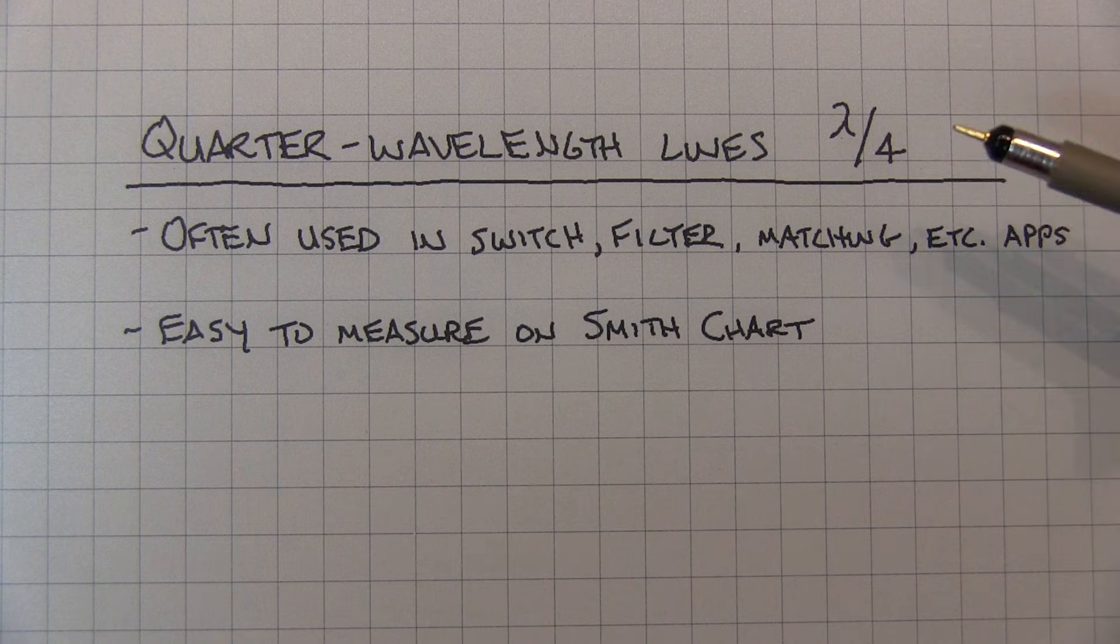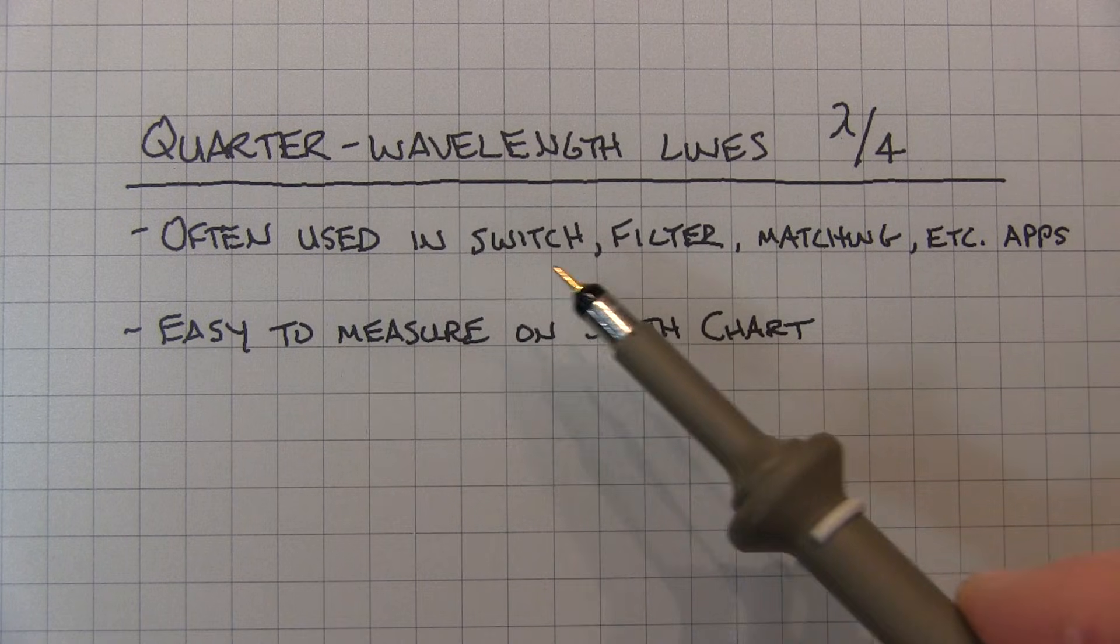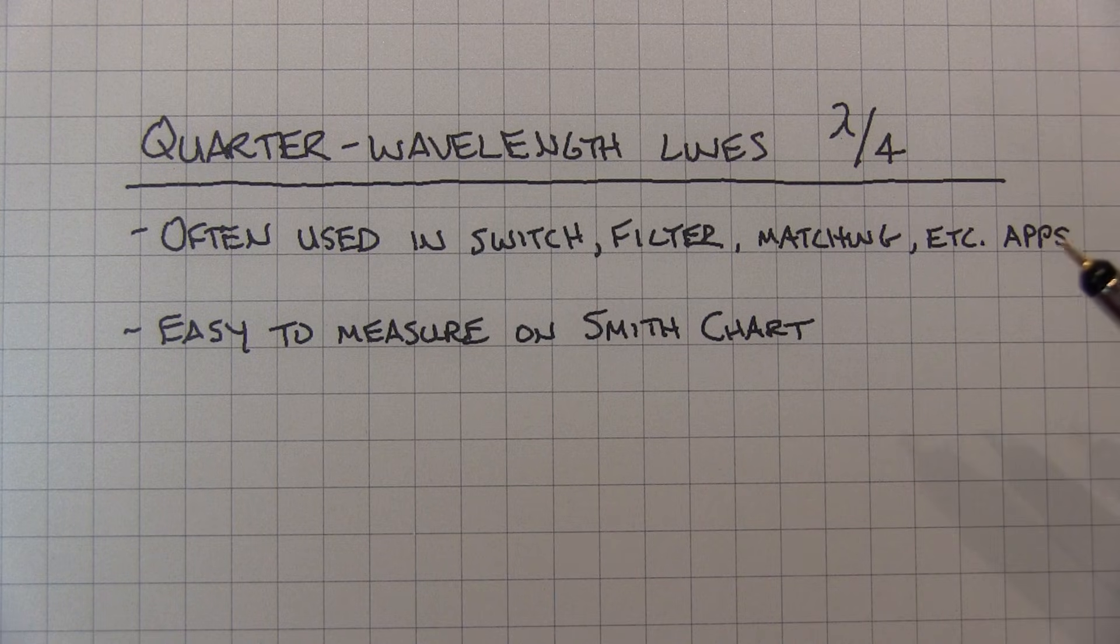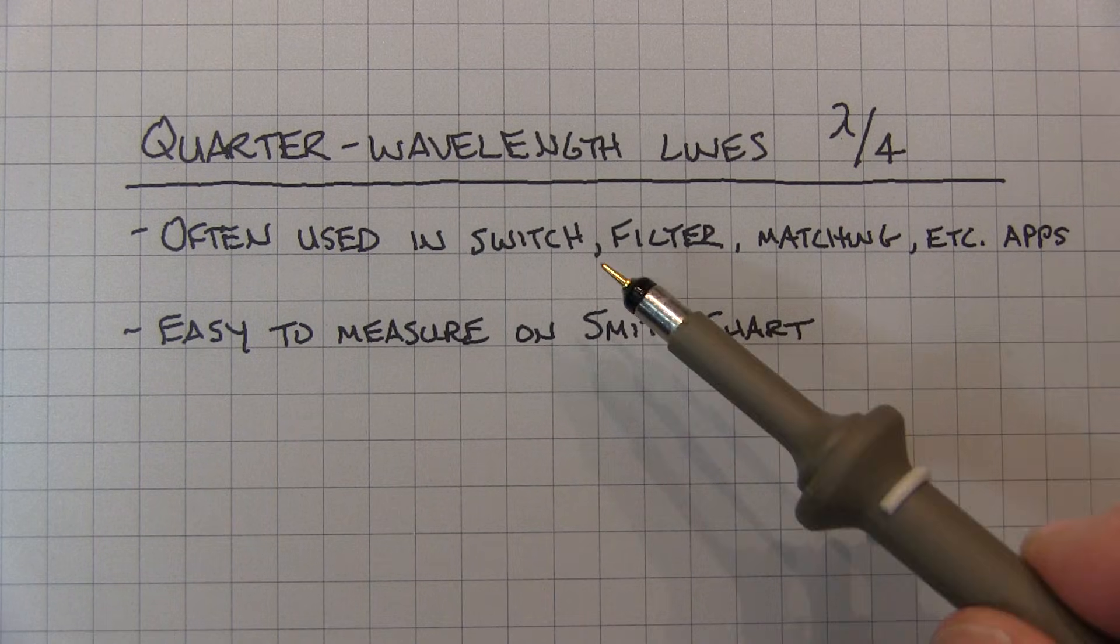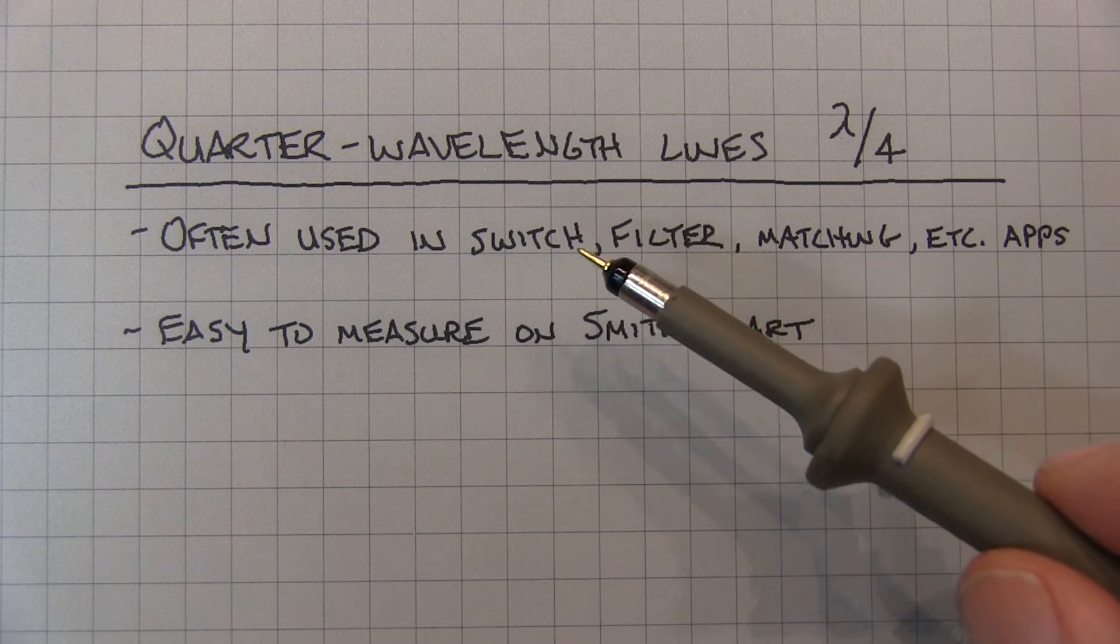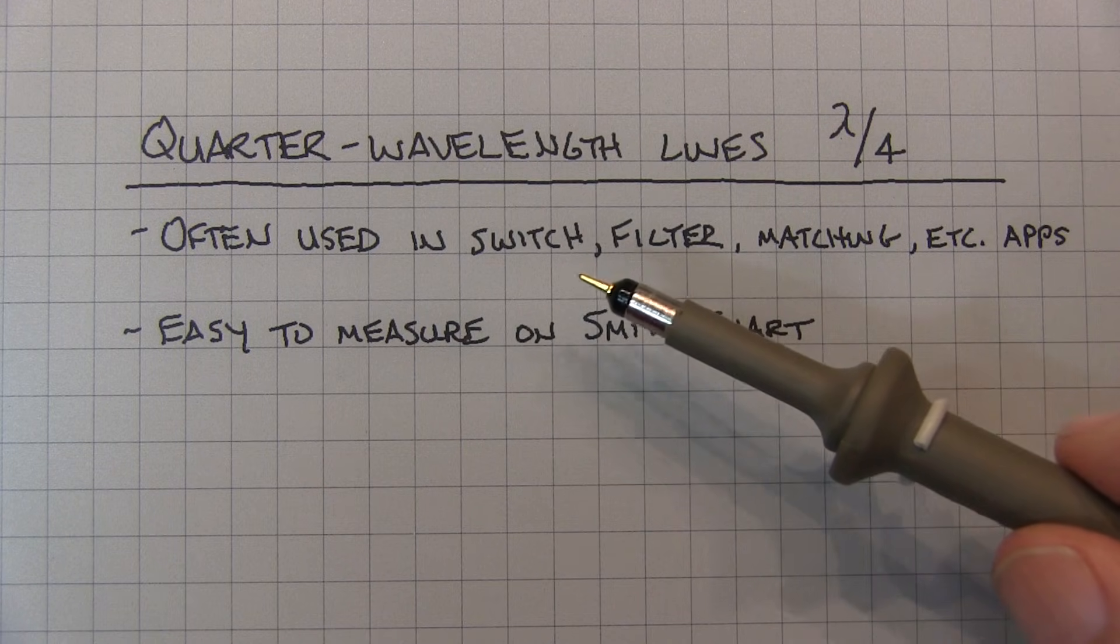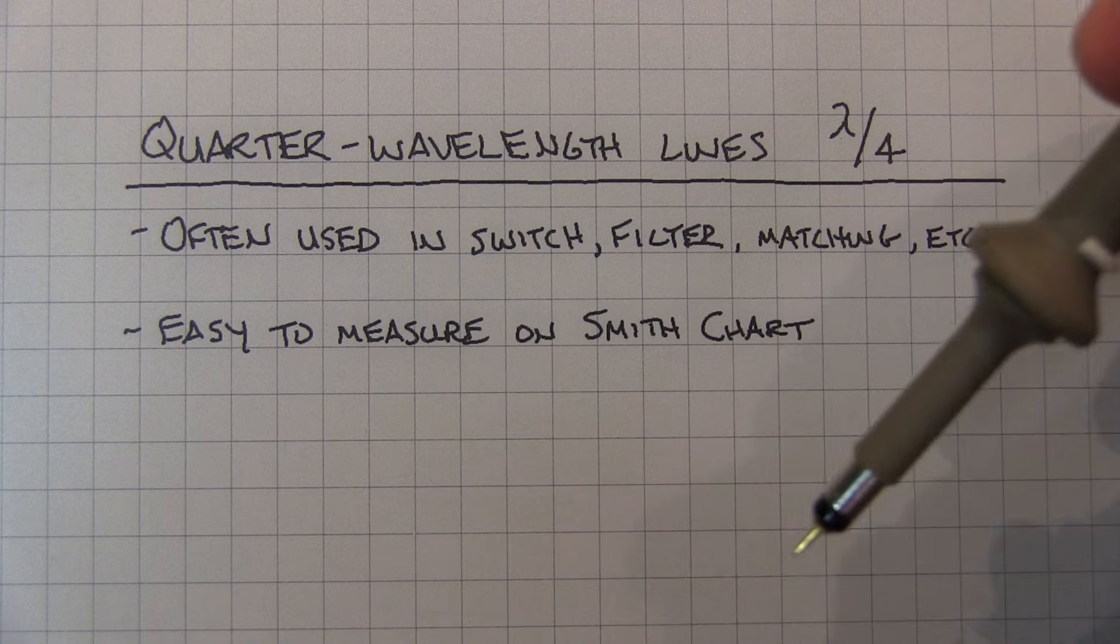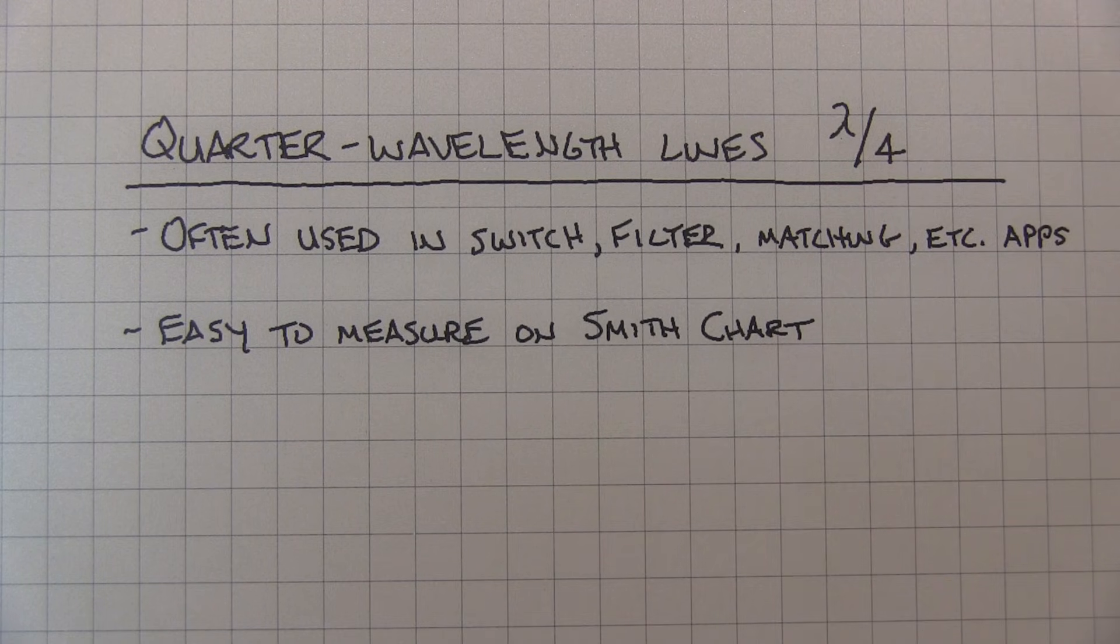Quarter-wavelength lines are kind of unique in that they do this impedance inversion, and in the extreme case, do that open to short and short to open. Because of that, we find them being used a lot in various RF applications, such as for switches and filters and matching circuits. In fact, if you take a look at the video I did on a transmit-receive switch using pin diodes, I used a quarter-wavelength line as part of that switch. I'll link that video down below as well.